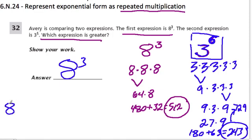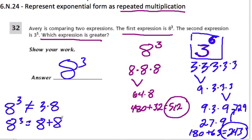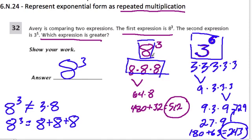Remember that 8 to the 3rd and numbers in this form don't mean 3 times 8 — that's the not-equal sign. They also don't mean to add the numbers repeatedly. What they do mean is to multiply the base the number of times the exponent asks. Here we're multiplying 8 out 3 times because the exponent is 3. There are many other fun videos on this topic — I hope you enjoy.